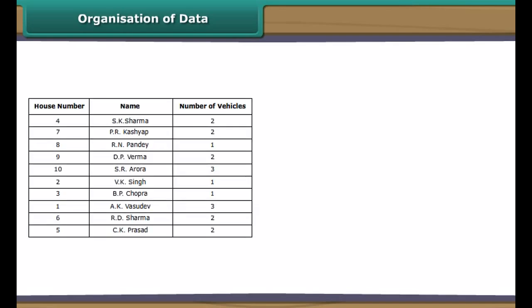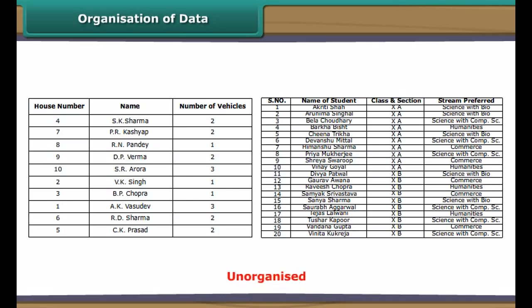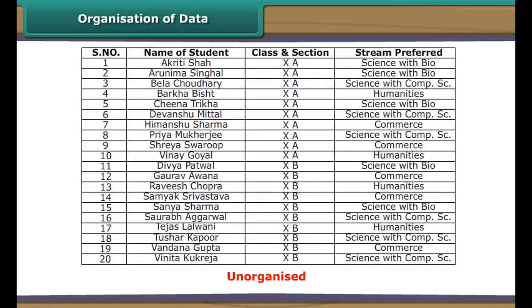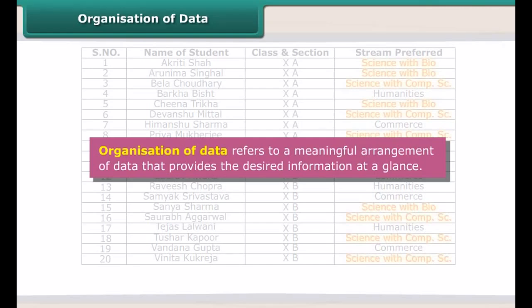Organization of data: The data collected by the RWA and the data provided by Sheetal to the academic in charge are unorganized. The former does not tell the RWA at one glance the number of residents who own more than one vehicle. Similarly, the latter does not tell the academic in charge at one glance the number of students who have opted for science. Organization of data refers to a meaningful arrangement of data that provides the desired information at a glance.